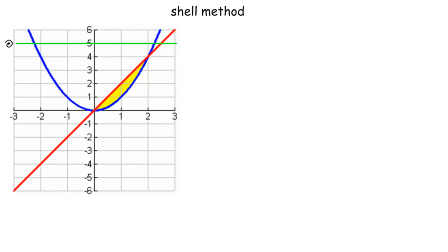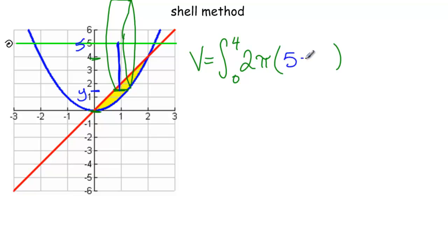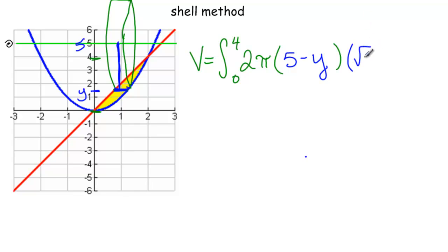Now let's find the same solid using the shell method. We cut parallel to the axis. Volume equals the integral from 0 to 4 — note there are no rectangles between four and five, so we don't include that — of 2π. The radius is the distance from the slice at y to the axis at 5. Since this is a vertical distance, we do top minus bottom: 5 minus y. Times the height, which is still square root of y minus one-half y, dy.